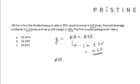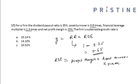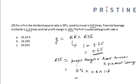ROE can be broken down using the DuPont formula: profit margin multiplied by asset turnover multiplied by financial leverage. That is 15% multiplied by 0.8 multiplied by 1.3, which gives an ROE of 15.6%.